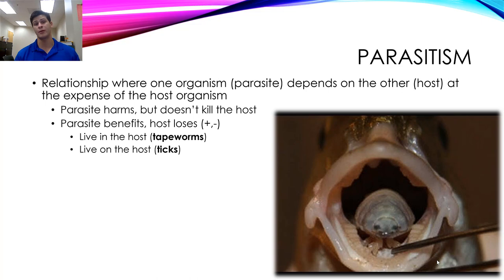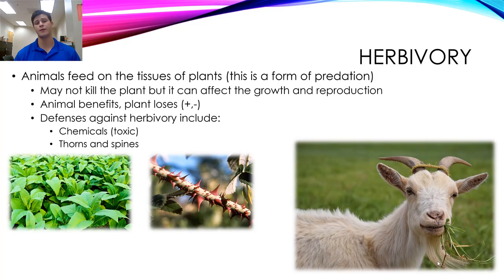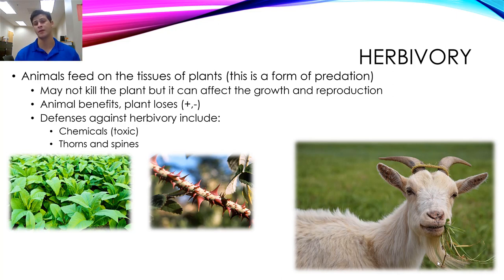Herbivory is when animals feed on the tissues of plants — similar to predation. This can be a form of predation or parasitism, depending on whether the animal outright kills the host or just harms it. Because it involves an interaction between animals and plants, it is treated as a different type of species interaction from predation and parasitism. In herbivory, the animal is the clear winner — it gets food — and the plant is the clear loser, losing resources or outright dying.